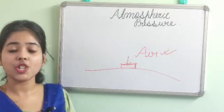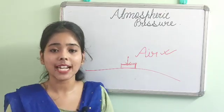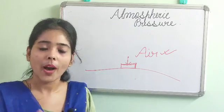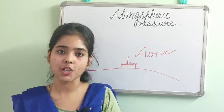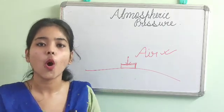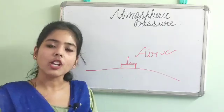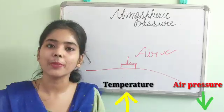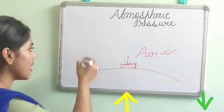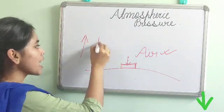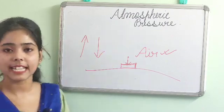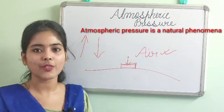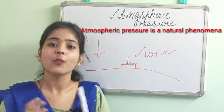This atmospheric pressure is really important and it also indicates the climatic condition of a particular place. Atmospheric pressure and temperature have an inverse or opposite relationship — when temperature increases, then obviously atmospheric pressure will be decreased. So temperature is increasing and atmospheric pressure is decreasing. Now there are some important amazing facts regarding atmospheric pressure.